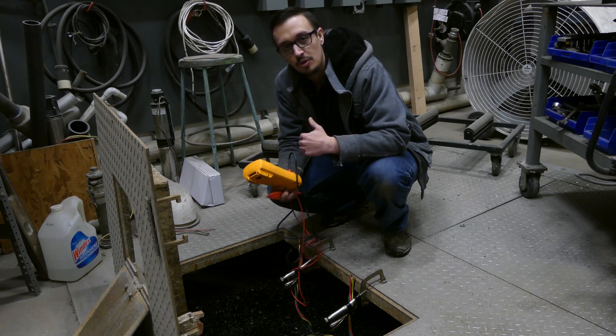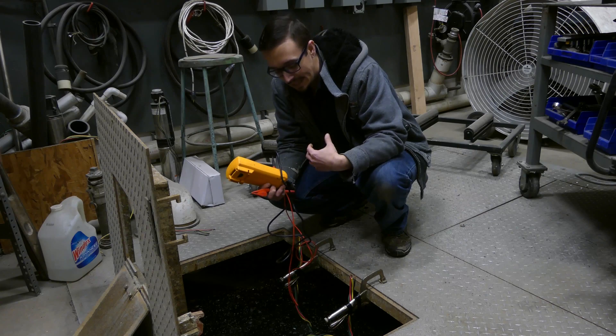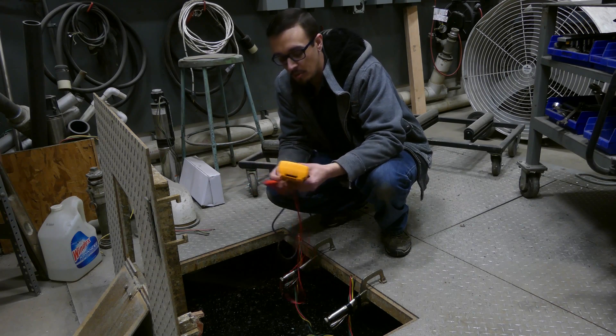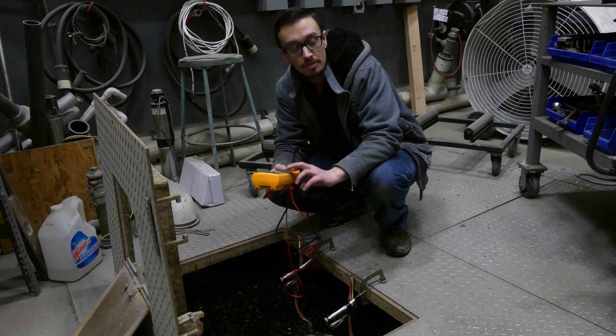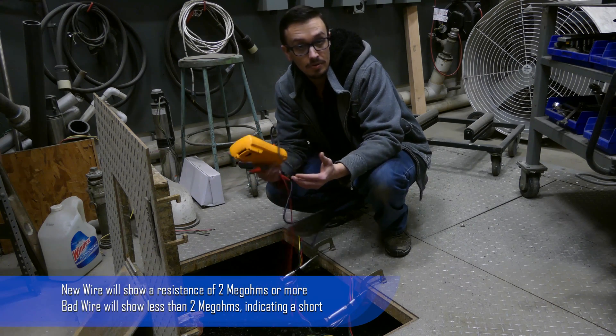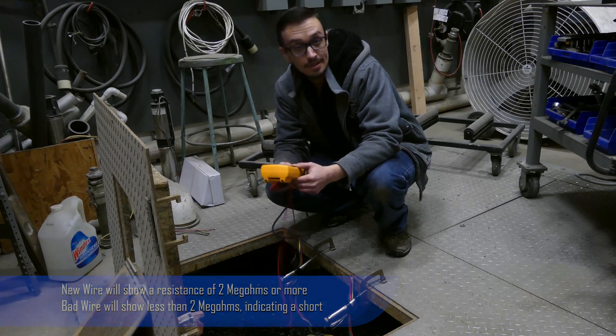So what we're going to be doing is putting some voltage through the wire, and then we're going to put one of our leads in the water. And then if it's able to pick up any of the resistance, then we're going to know that we've got a problem. So let's go ahead and get started.